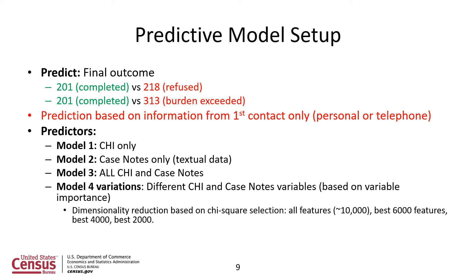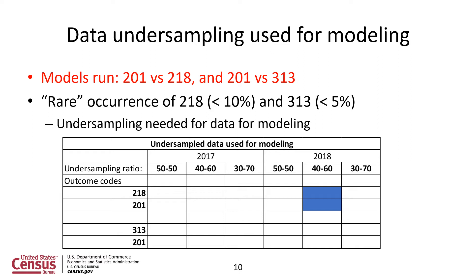We first set up a binary predictive model where the final outcome is either 201 versus 218 (completed versus refused) or 201 versus 313 (completed versus burden exceeded), with prediction based on information from the first contact only. Our predictors are: model one — CHI only; model two — case notes only; model three — all CHI and case notes variables; and model four — variations based on variable importance given by their chi-square values. We run two different sets of models: 201 versus 218 and 201 versus 313. The occurrence of 218 is less than 10% of the data, and for 313, it's less than 5%, requiring undersampling of the data for modeling.